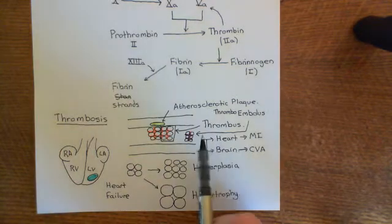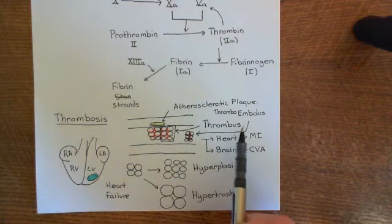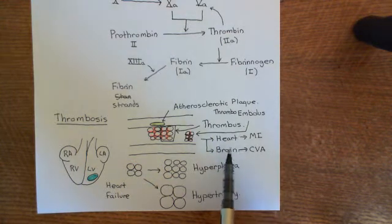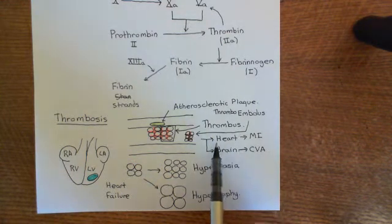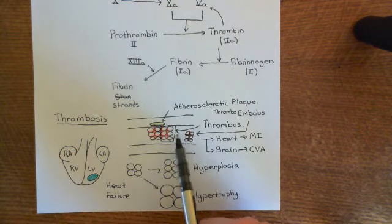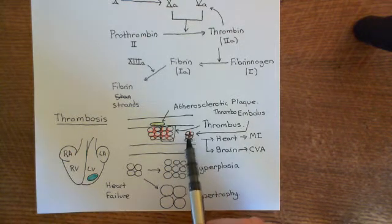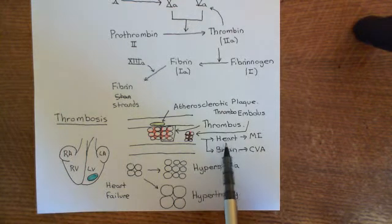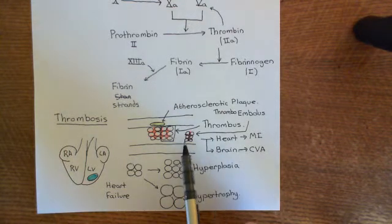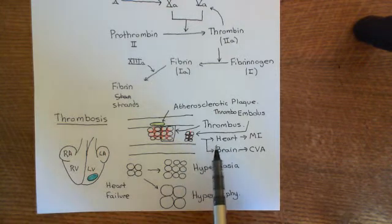Thromboemboli can end up lodged in smaller blood vessels in the heart and the brain. You might not even need a thrombus to form in the blood vessel of the heart or brain — it could form somewhere very distant away, be moved through the bloodstream, and get lodged in a blood vessel there, completely blocking it.